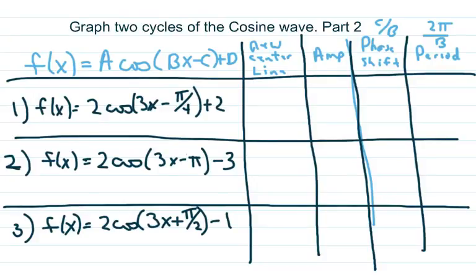Hi, everyone. We're going to graph two cycles of the cosine wave. This is part two from part one we did earlier. In this case, our period is going to be a little different than the other one we did. The other one we did, the periods were all two pi. So, let's fill out our little chart.